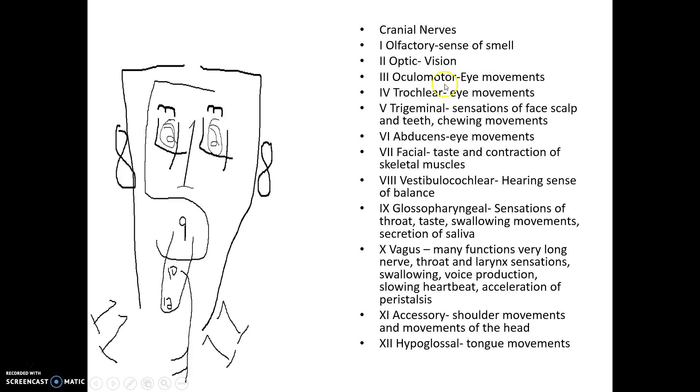Oculomotor, which means eye movement. Trochlear, which is also eye movements. Trigeminal: the scalp, face, and teeth, and chewing movements. Abducens: eye movements. Notice we actually have 3 different cranial nerves that deal with eye movements, and when we look at our eyes, we have 3 different pairs of muscles on our eyes that move our eyes in different directions. These cranial nerves are controlling those.